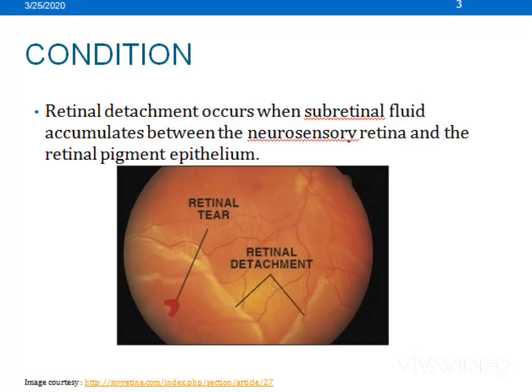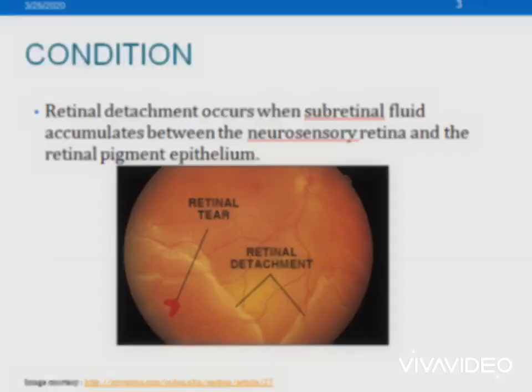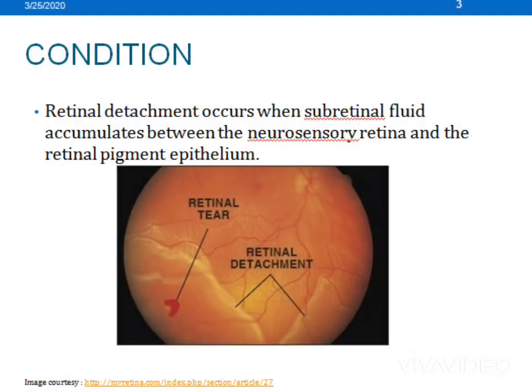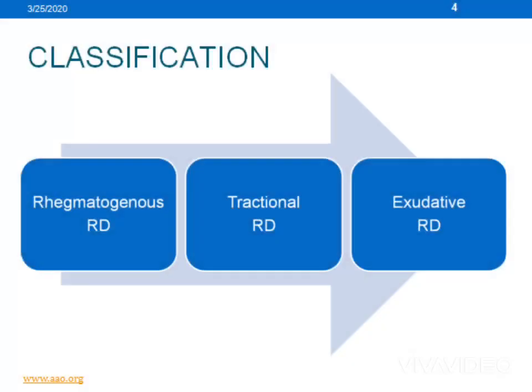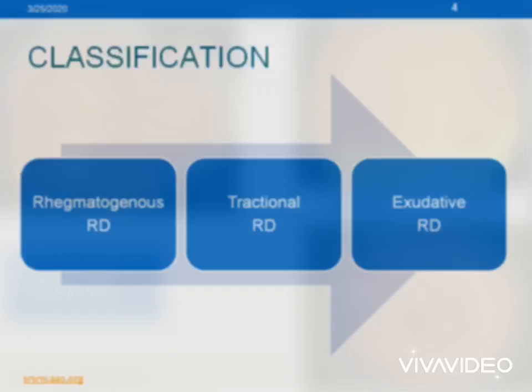Retinal detachment is a condition which occurs due to the sub-retinal fluid that accumulates between the neurosensory retina and the retinal pigmented epithelium layer. It is usually classified as rhegmatogenous RD, tractional RD, and exudative retinal detachment.